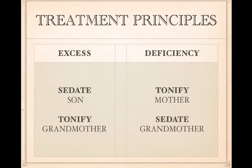If you notice, the second point is always going to be a grandmother point. So one point for sedation, one point for tonification, and one of those points always has to be the grandmother point. So if you're sedating the son, then you're tonifying the grandmother. Or if you're tonifying the mother, you're sedating the grandmother. So what you're looking at right now shows you how to get the first two points. Let's first get these first two points, and then we'll find the other two.